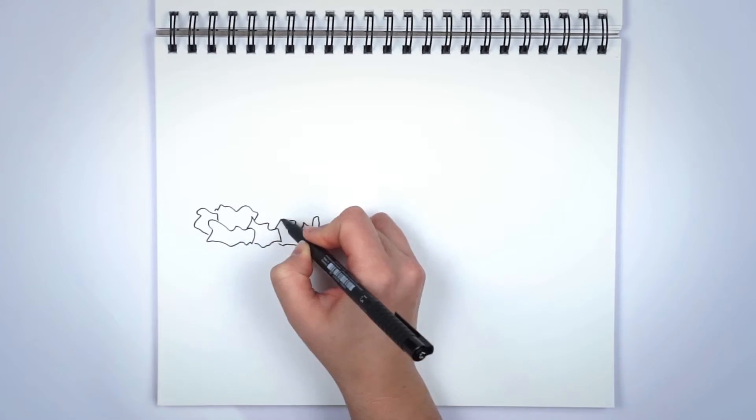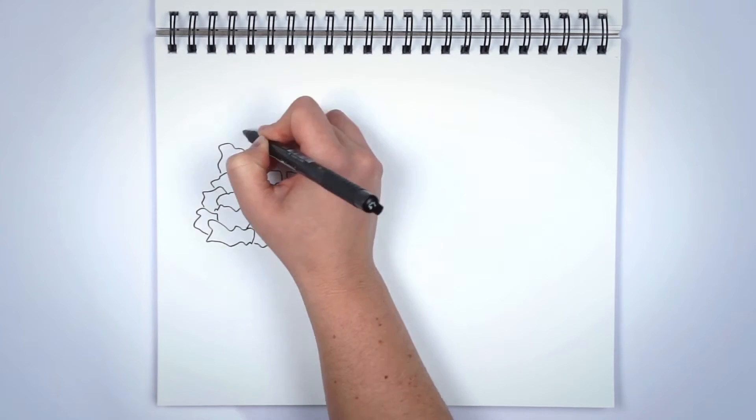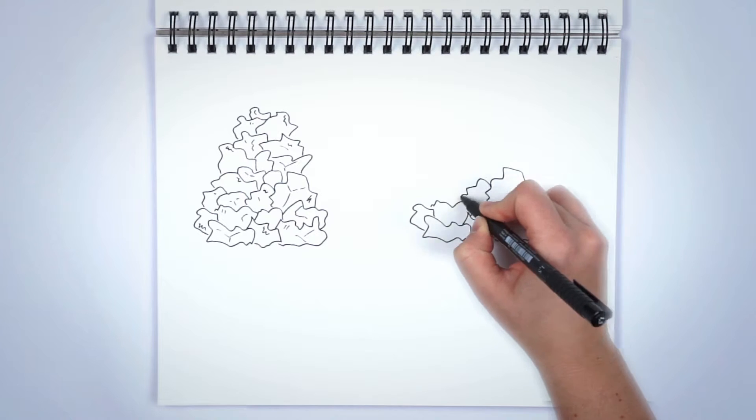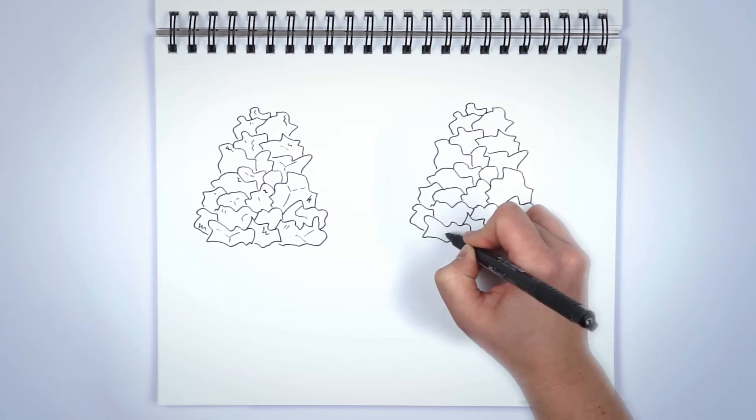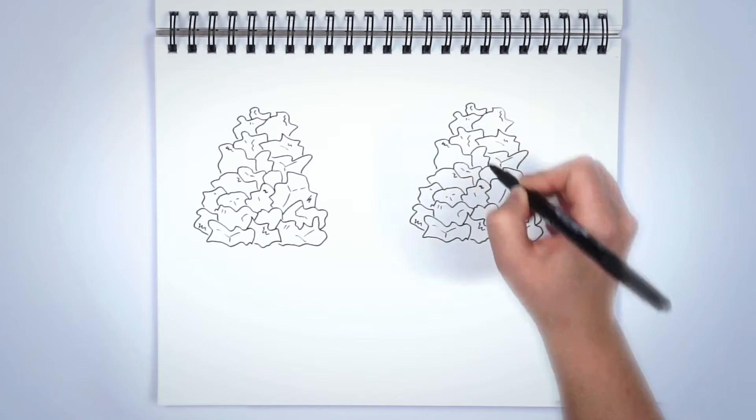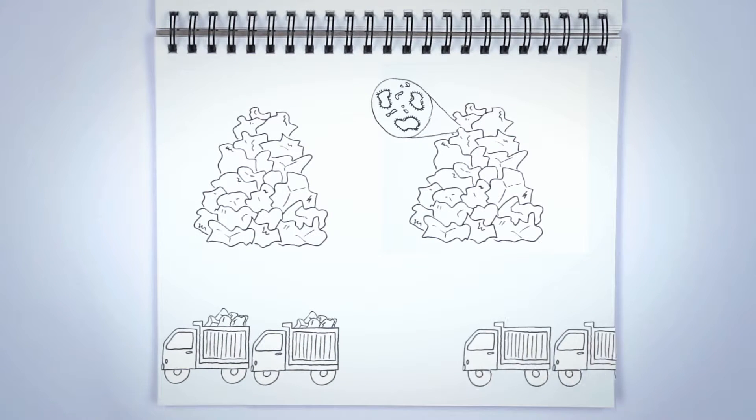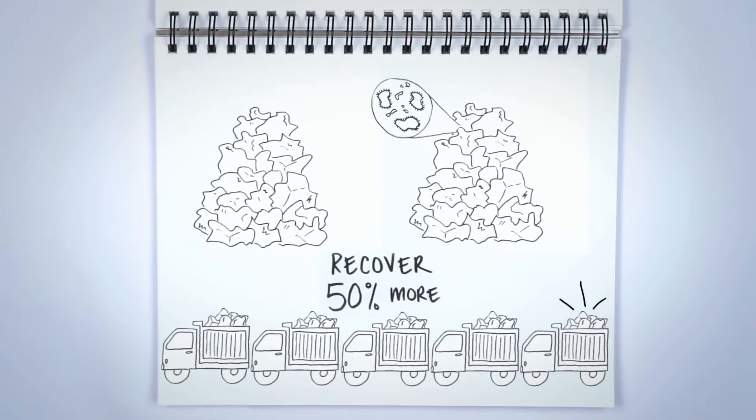For example, some microbes can help us extract valuable metals from low-grade ores or even tailings. Genomics can help us understand the DNA of these microbes so we can best leverage their bio-leaching expertise. This could extend the value of the metal recovery by as much as 50%.